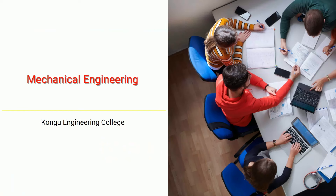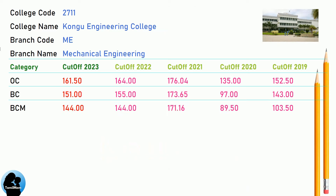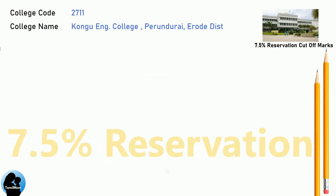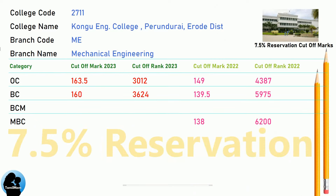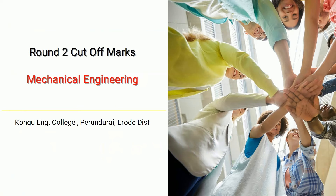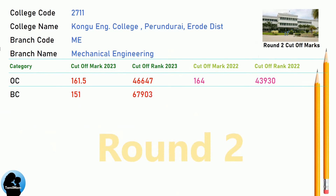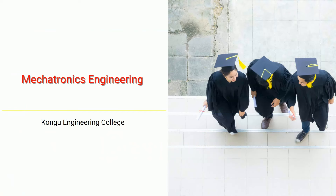BNA Cut-Off for Kongu Engineering College in Mechanical Engineering. BNA 7.5 Reservation Cut-Off for Kongu Engineering College in Mechanical Engineering. BNA Round 2 Cut-Off for Kongu Engineering College in Mechanical Engineering. BNA Cut-Off for Kongu Engineering College in Mechatronics Engineering.